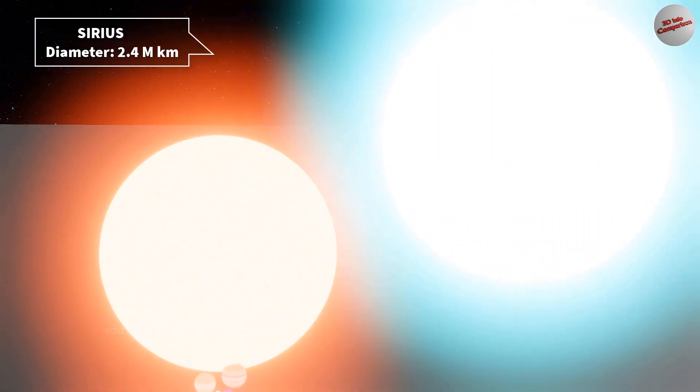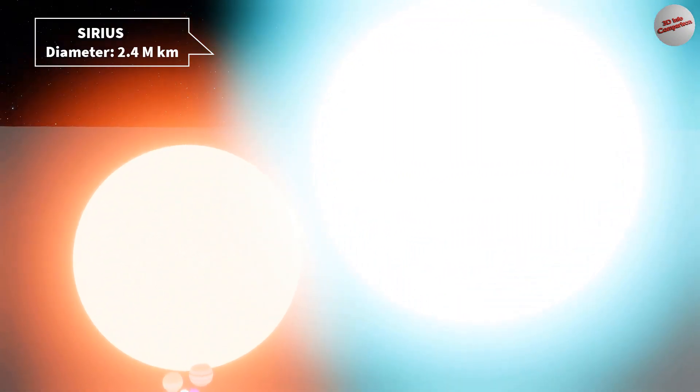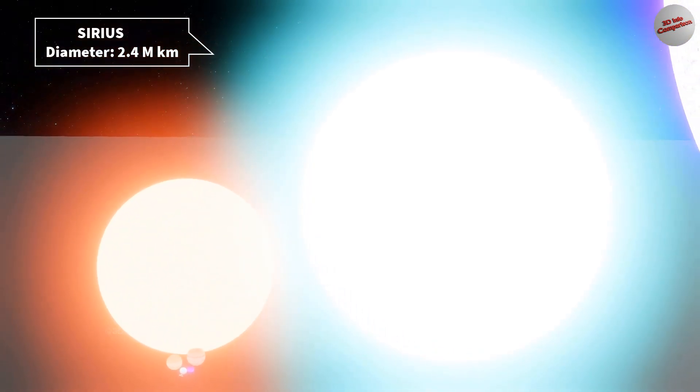Sirius is the brightest star in the night sky and the primary component of the Sirius binary star system. It has an approximate diameter of about 1.7 million kilometers.